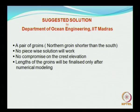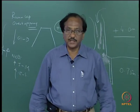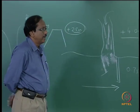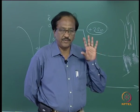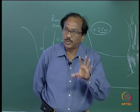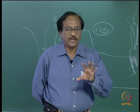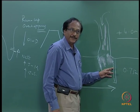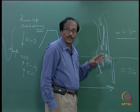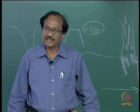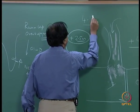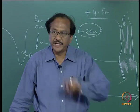What we have suggested is a pair of groins — the northern groin should be shorter than the southern one, and no piecewise solution. This kind of problem, if you face it, has to be solved in total. There is no point in constructing one training wall this year and another next year. No compromise on the crest elevation — the top crest elevation has been raised to something like plus 4.5 meters, though details have to be worked out.